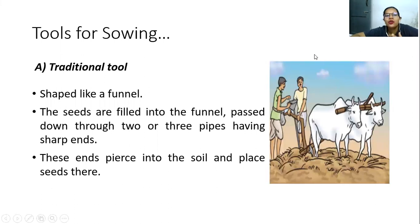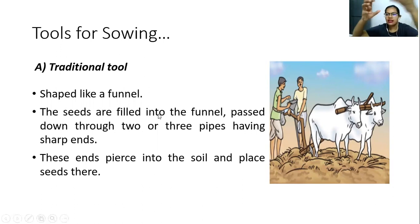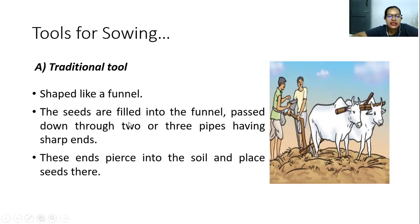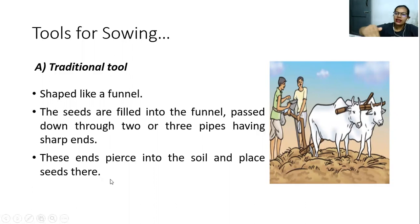What are the different tools for sowing? The first is the traditional tool shaped like a funnel, attached to the hull. Seeds are placed into the funnel and passed down through two or three pipes with sharp ends that pierce into the soil and place the seeds there.